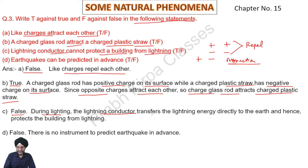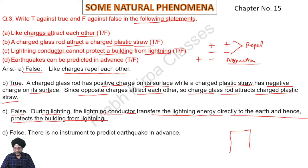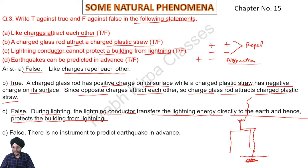The main purpose of a lightning conductor is to protect the building from lightning. During lightning, the lightning conductor transfers the lightning energy directly to the earth. A wire attached to the lightning rod ultimately goes to a plate buried below the surface of the earth. The lightning charge passes from the lightning rod to the earth and the building remains safe.